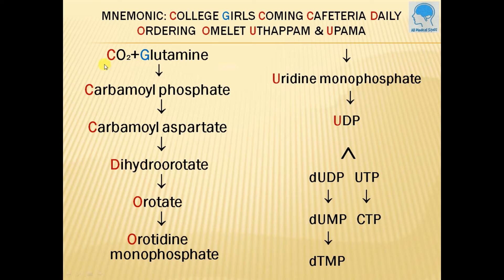Here, C stands for CO₂, G stands for glutamine, C stands for carbamoyl phosphate, another C stands for carbamoyl aspartate, and D stands for dihydroorotate. O stands for orotate, another O stands for orotidine monophosphate, U stands for uridine monophosphate, and another U stands for UDP.